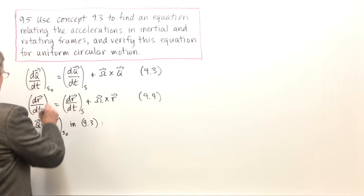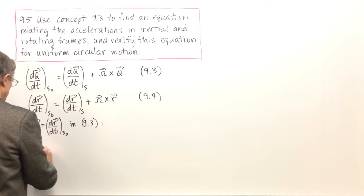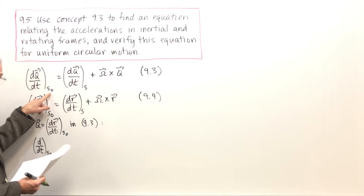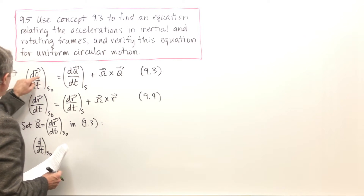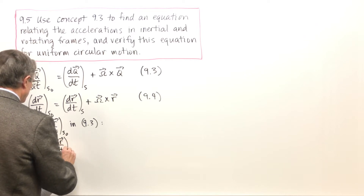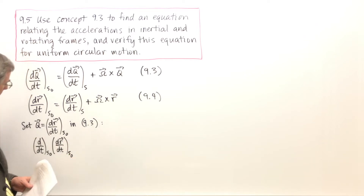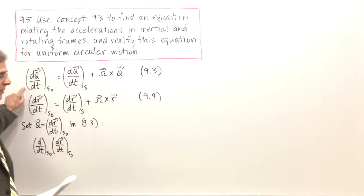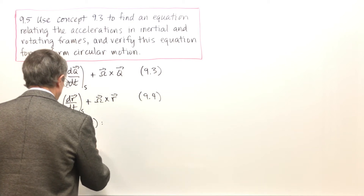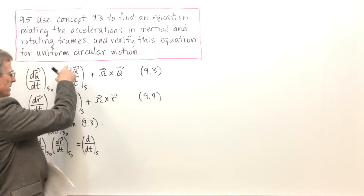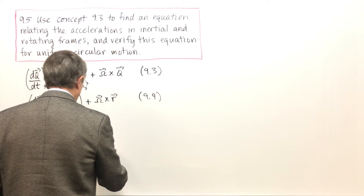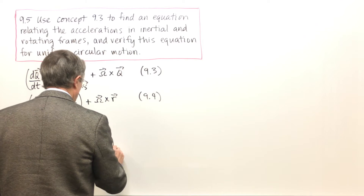There's a d/dt — that's the d/dt in the inertial frame — and then we have q, which is dr/dt in the inertial frame. That takes care of that term. Over here, d/dt in the rotating frame operates on q, which is dr/dt in the rotating frame.